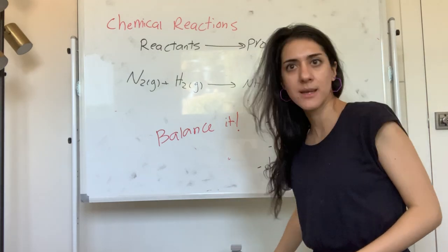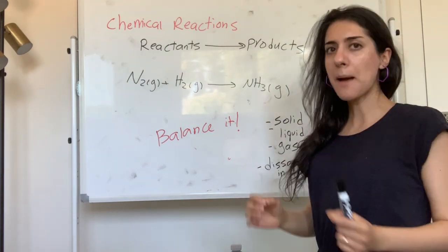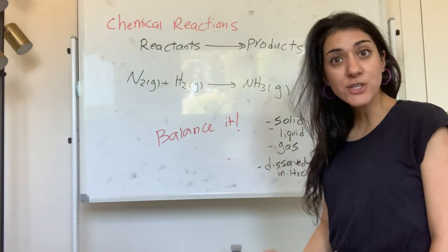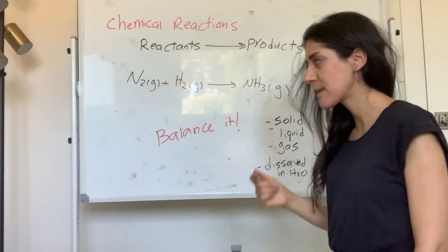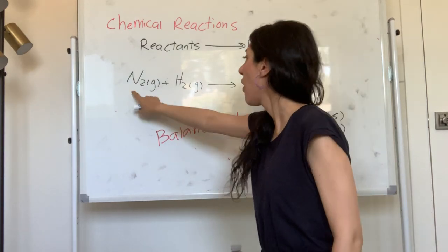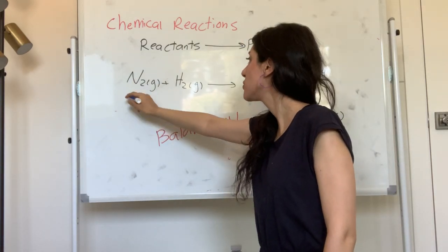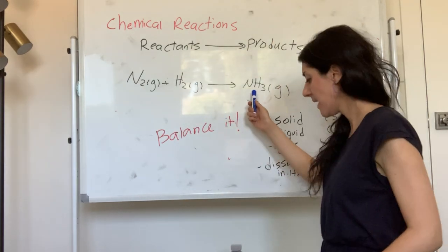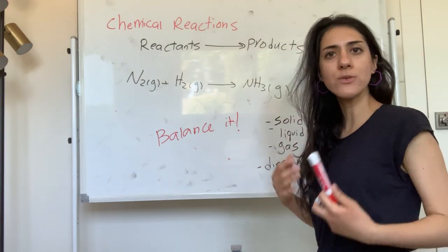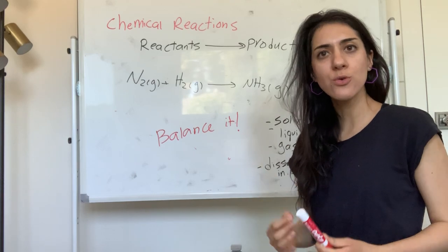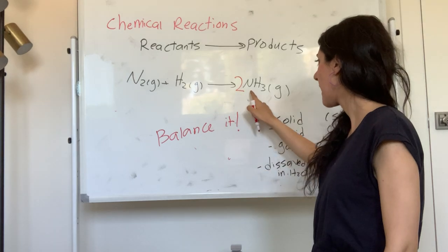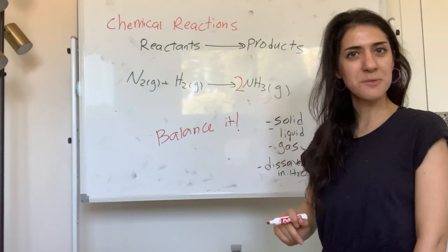What do I mean by balancing a chemical equation? It means you have to have exactly the same number of atoms on each side. So let's give it a shot. Over here, how many nitrogen do I have? I have two nitrogen. But right here I only have one nitrogen — that cannot be happening. So what do you do to balance the chemical reaction? You use coefficients. I'm going to put two over here, so now I have two nitrogen on each side.